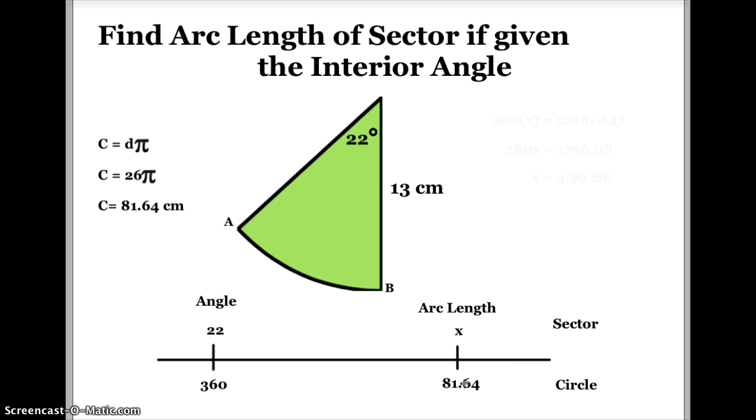The way I do that is I take x times 360 and set that equal to 22 times 81.64. Then I multiply both sides. 360 times x is just 360x. 22 times 81.64 is going to be 1796.08. Now to solve for x, all I have to do is divide both sides by 360. I'm doing that because I'm undoing multiplying x by 360. And when I do that, my x is equal to about 5 centimeters.